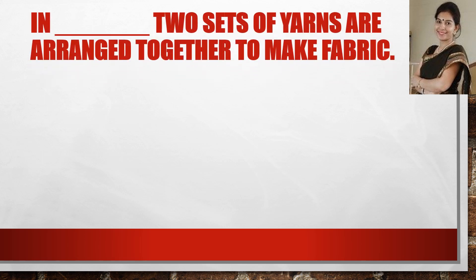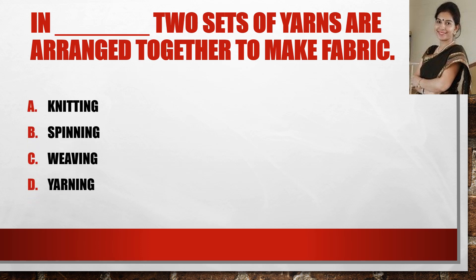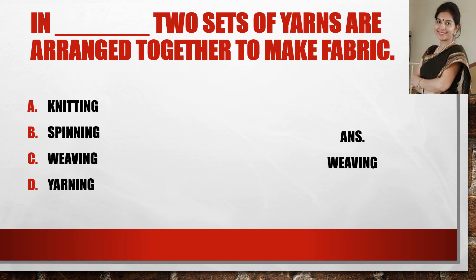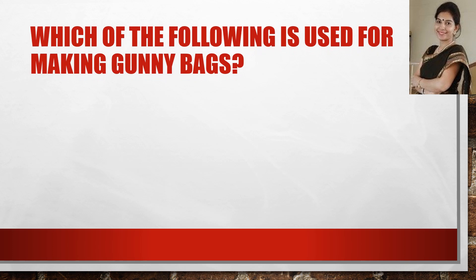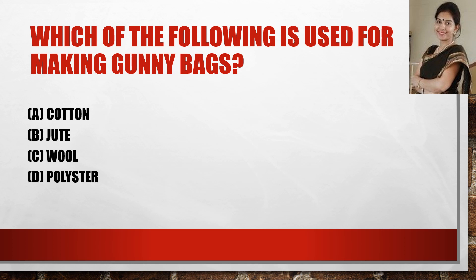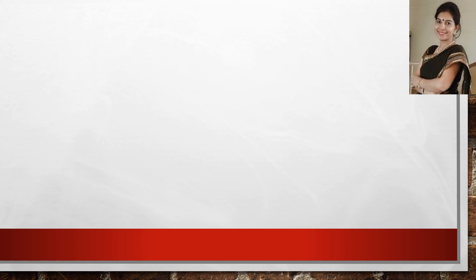Next question: in dash, two sets of yarns are arranged together to make a fabric. The correct answer for this question is weaving. Now the next question: which of the following is used for making gunny bags? The answer is jute.